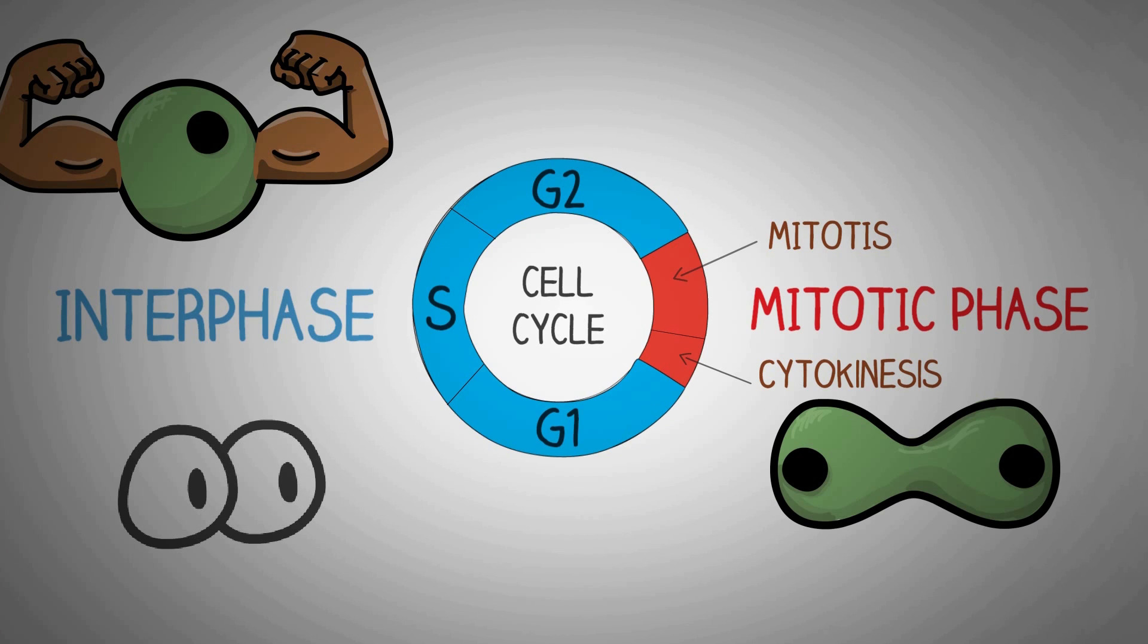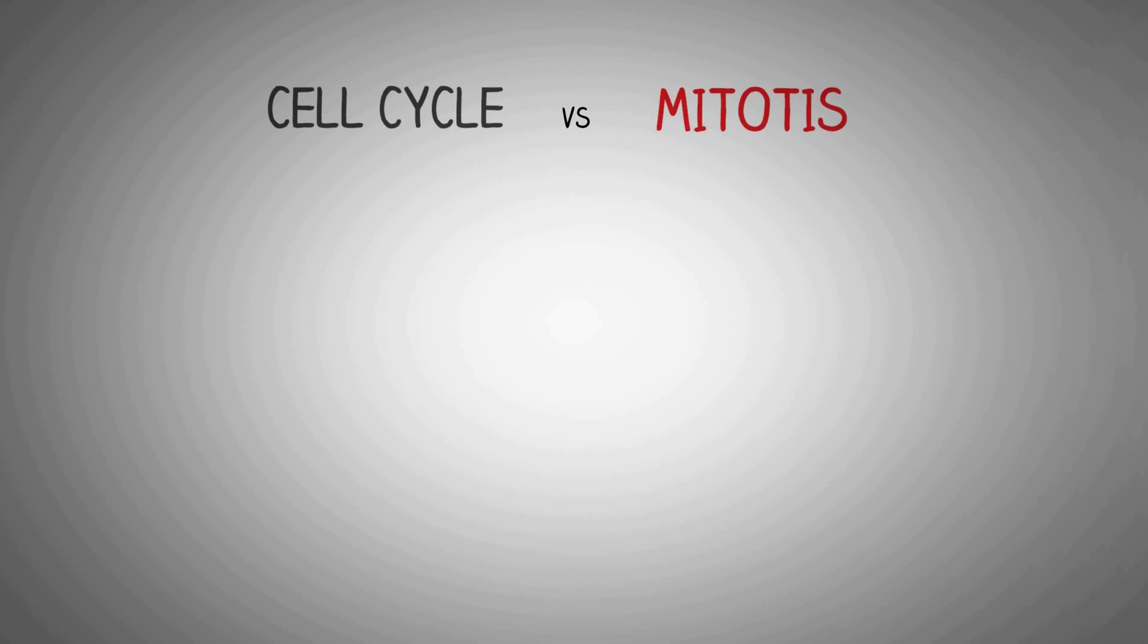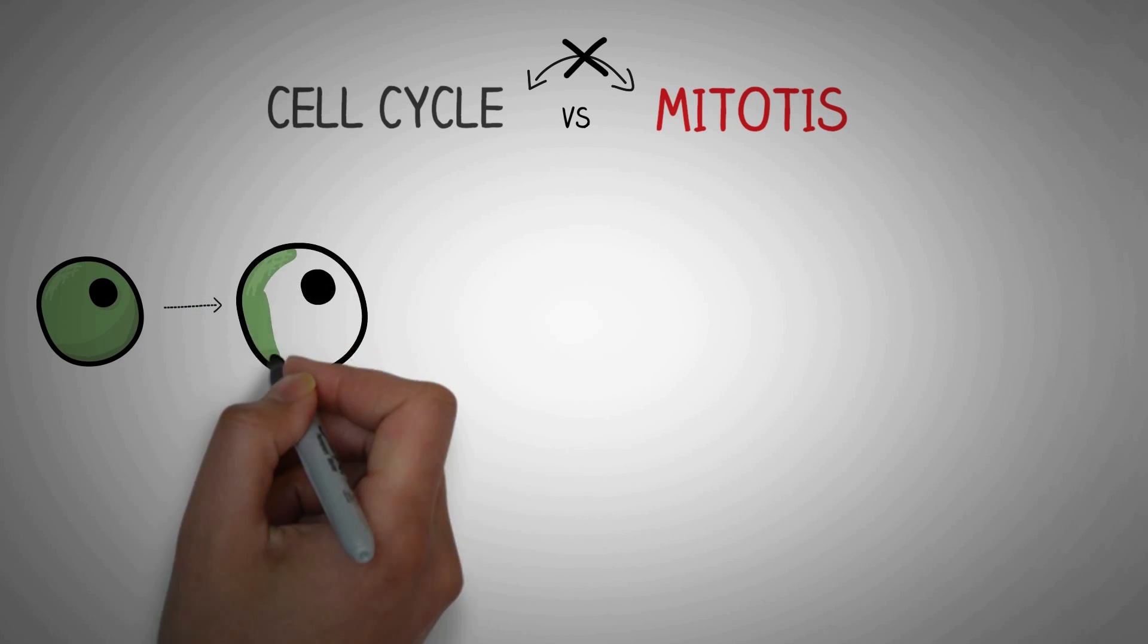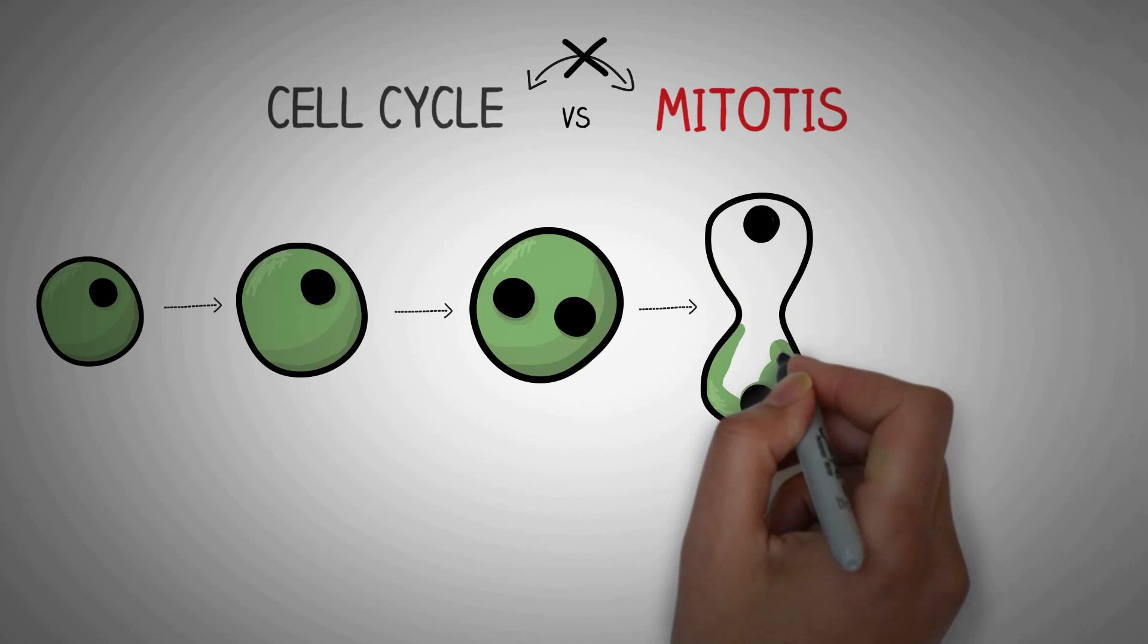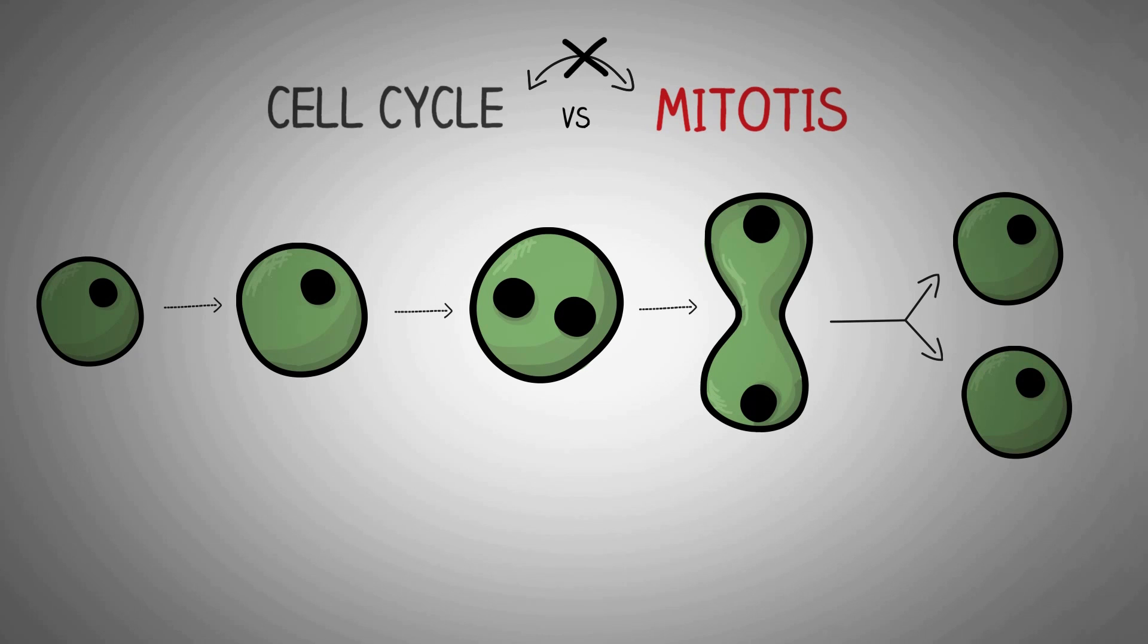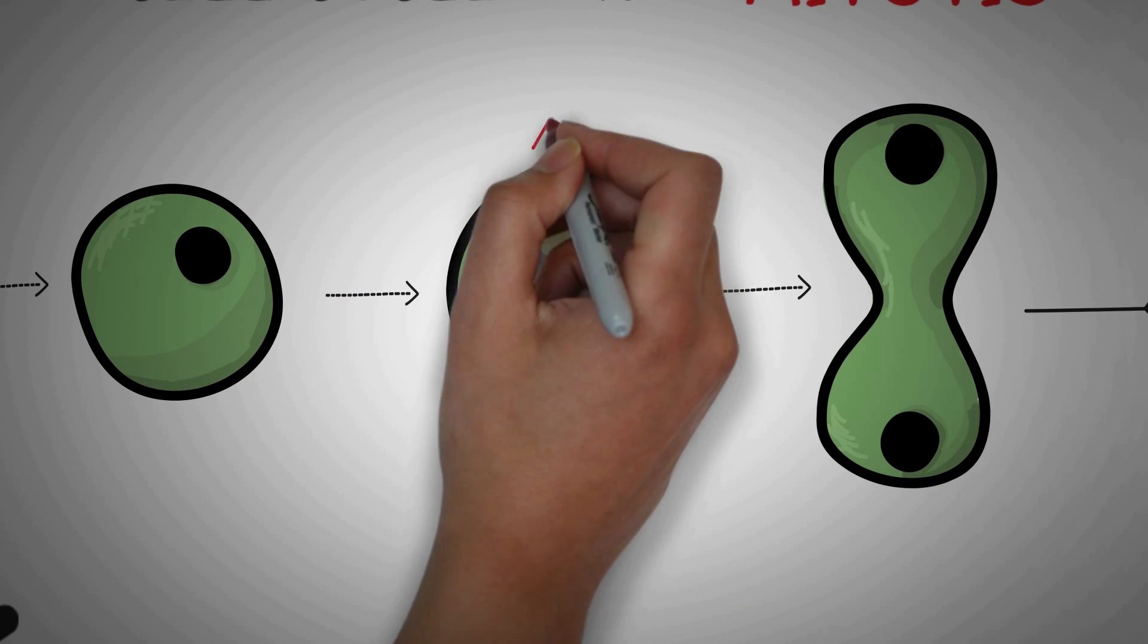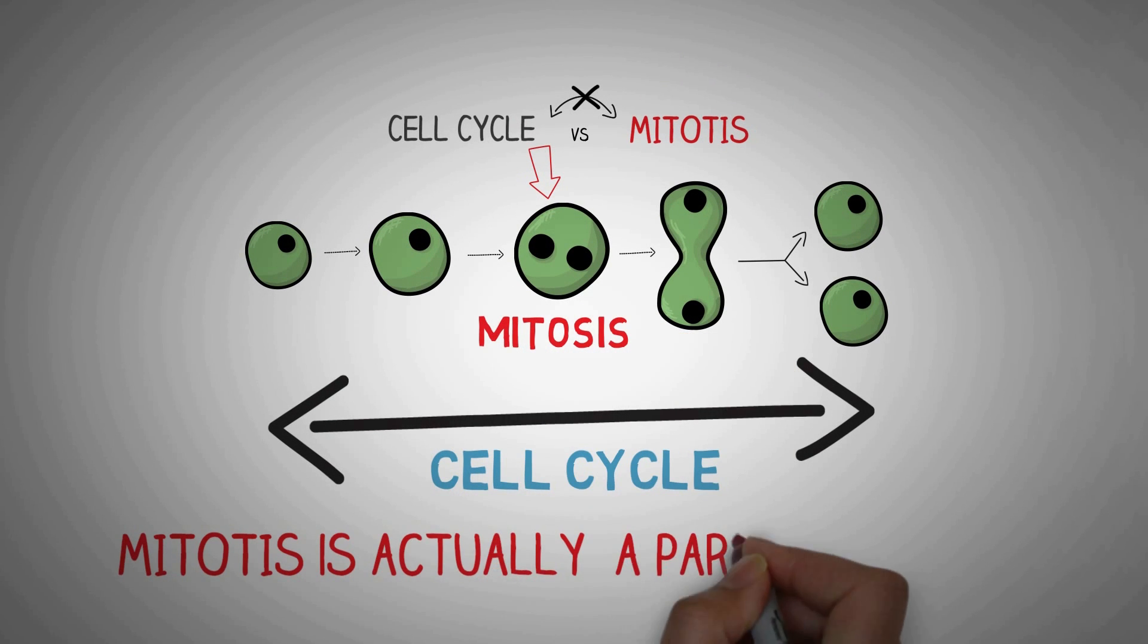And before we talk about these phases in detail, I want to clear one important topic that most of the students get confused between the term mitosis and cell cycle and use them interchangeably. But they are different. Now let me help you explain this with an example. So here is a cell. First it gains nutrition and grows, then it divides its nucleus and after that it also divides its cytoplasm to produce two new cells. These two cells continue with the same process to produce four more cells and so on. So if you look here from this point to this point, this whole thing is known as cell cycle and the step here during which the cell divides its nucleus, this is known as mitosis. So mitosis is actually a part of cell cycle during which the nucleus of the cell divides. I hope I am able to make you understand this clearly.